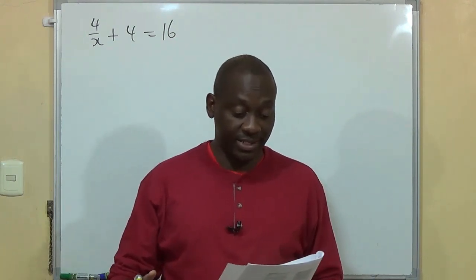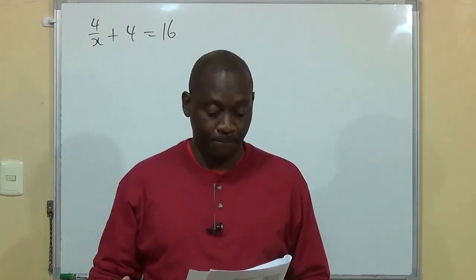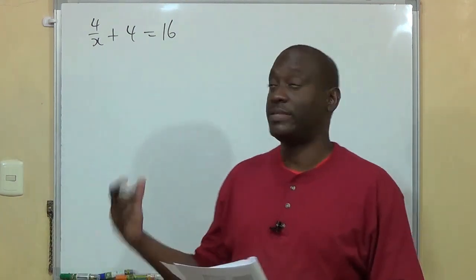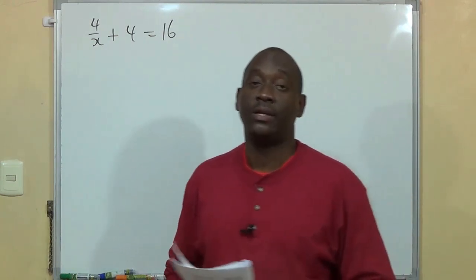4 over x plus 4 is equal to 16. Then x is equal to A, B, C, and D. We have the question written on the board here, slowly proceed.